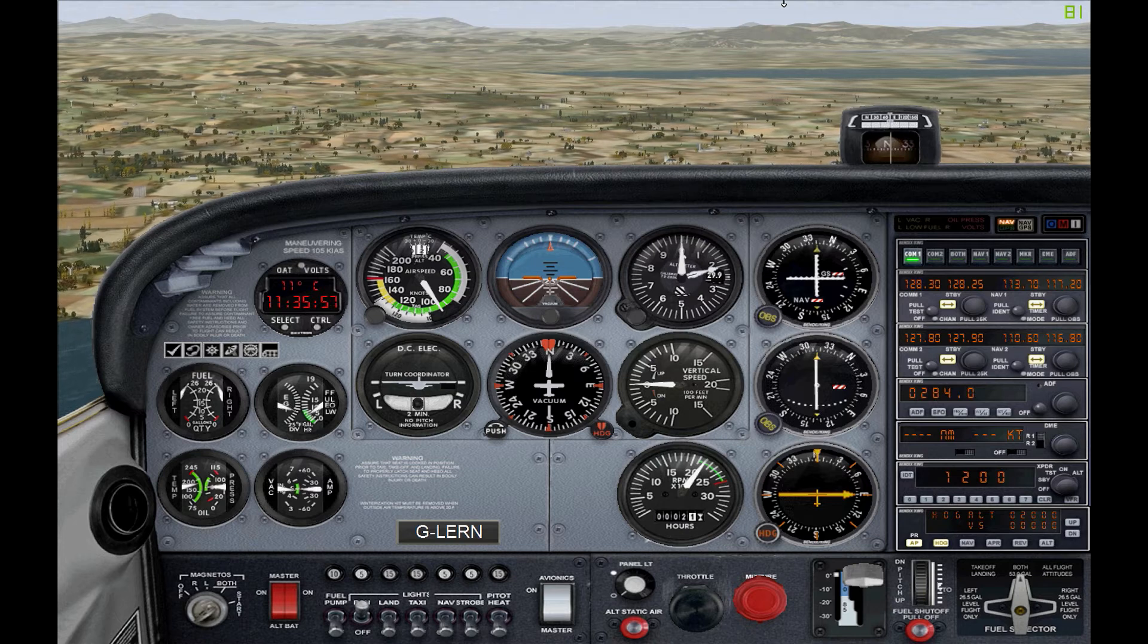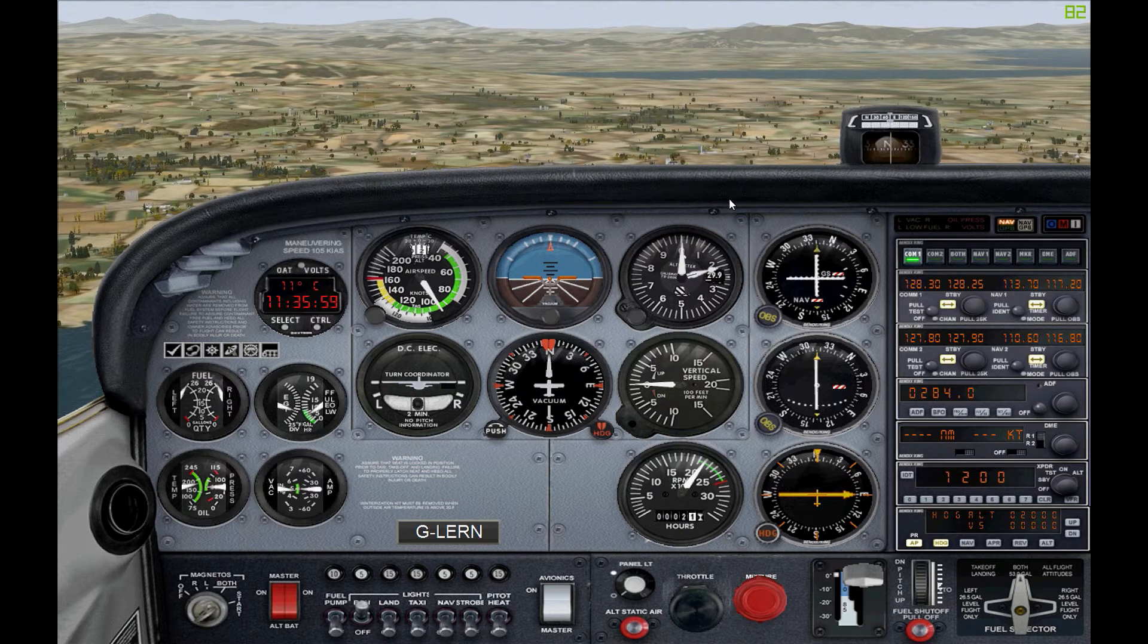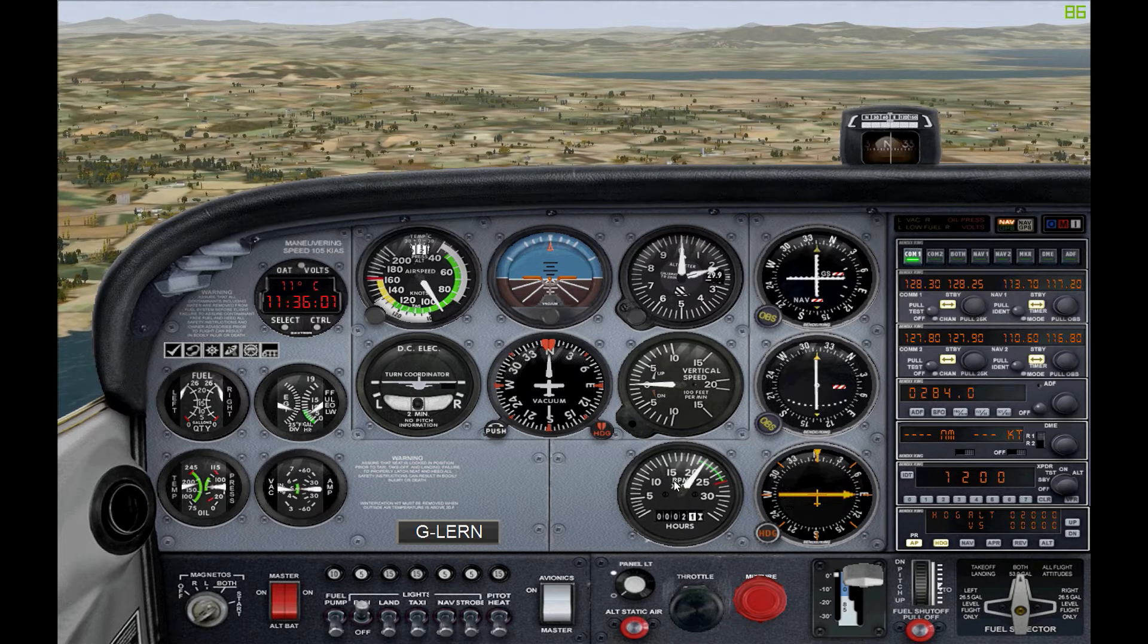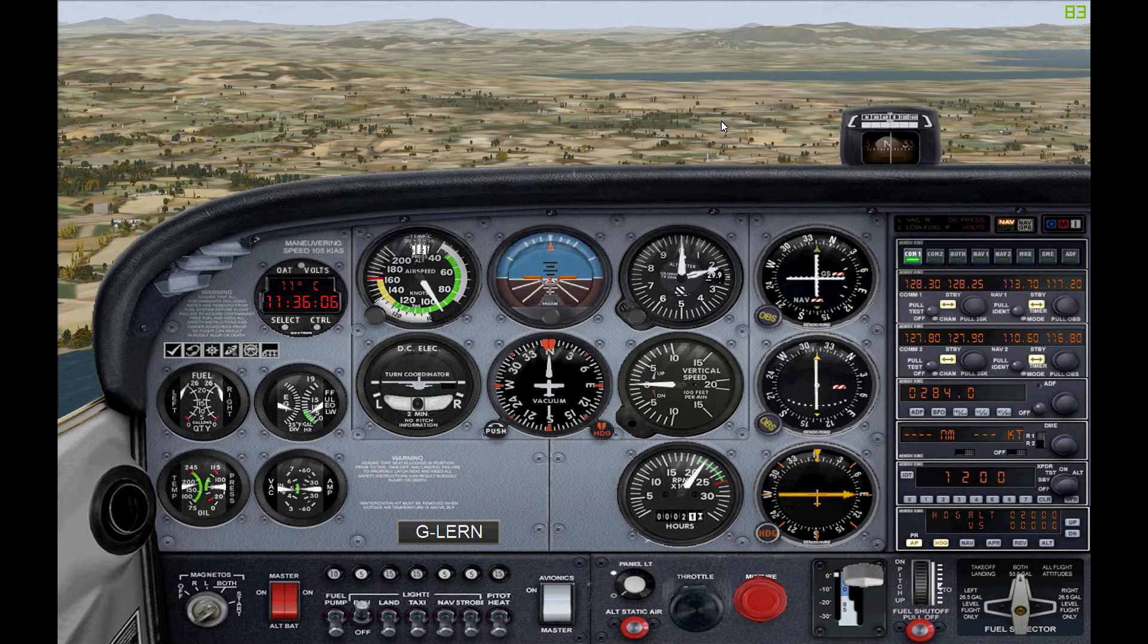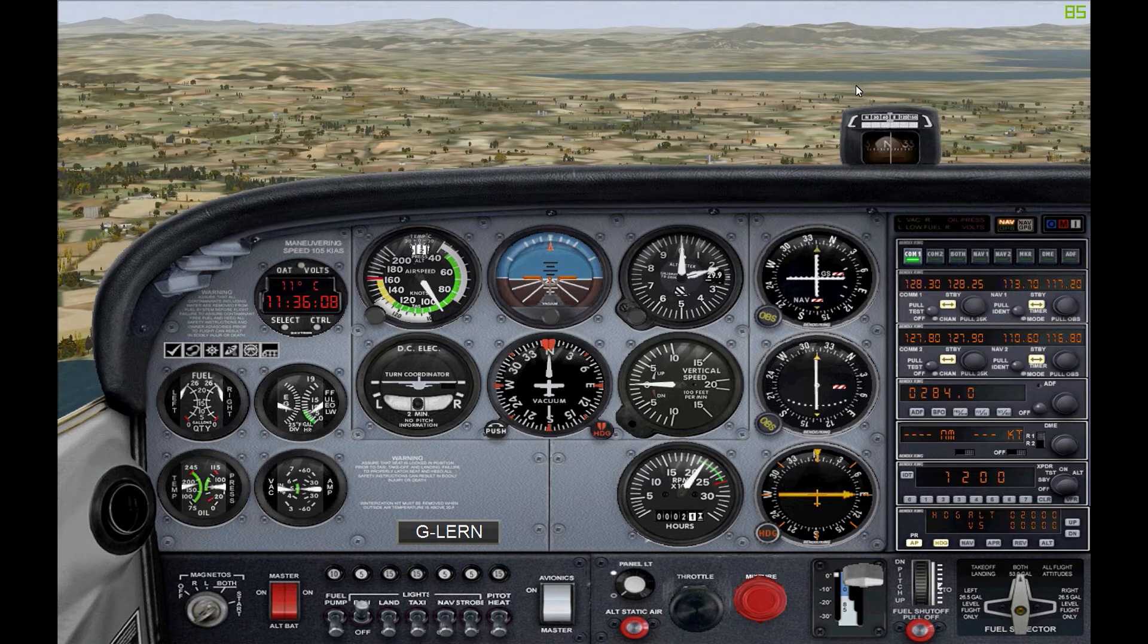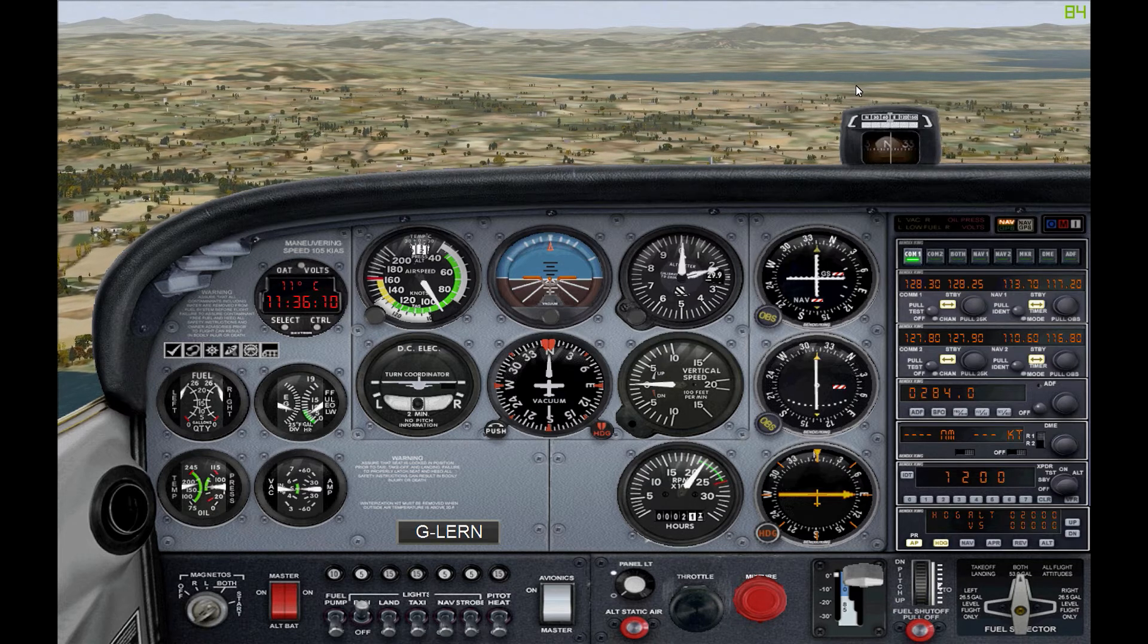Ok so here we are in the plane. We're currently at 2000 feet, we're travelling about 95 knots and we've got our engine speed at 2200 RPM. So what we're going to do just now is simply increase the throttle to full and let's see what happens.